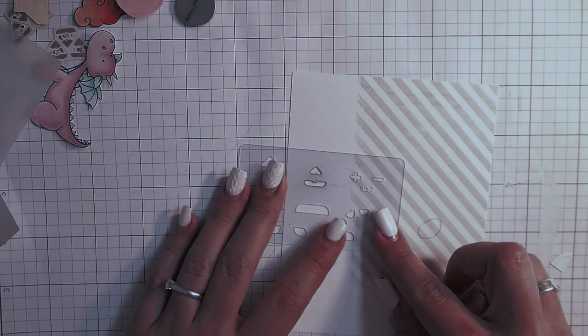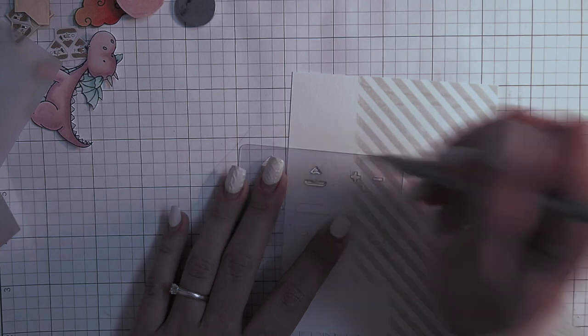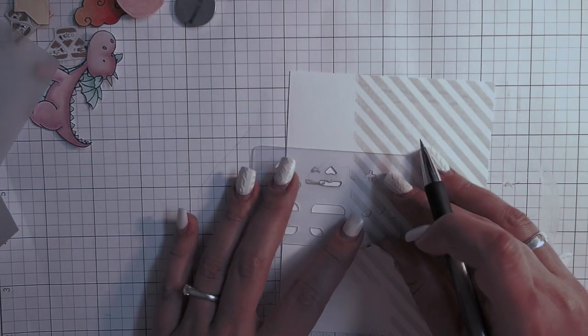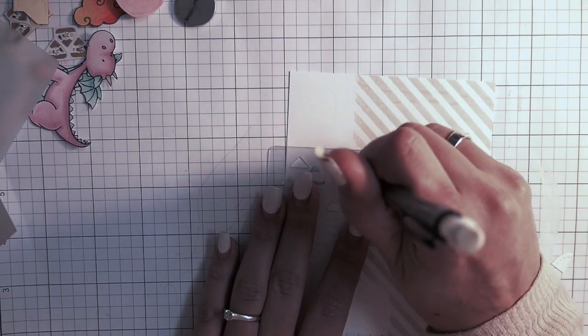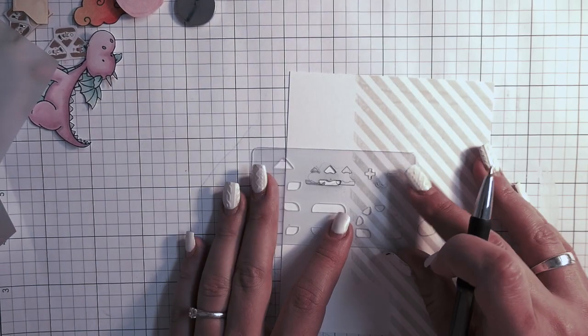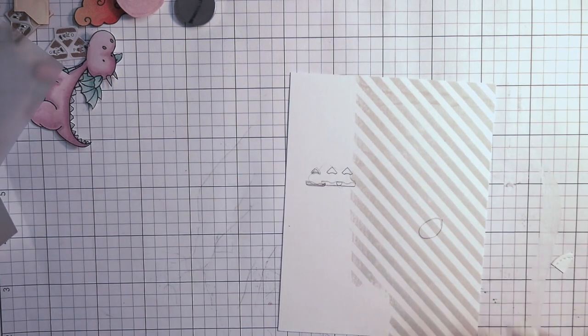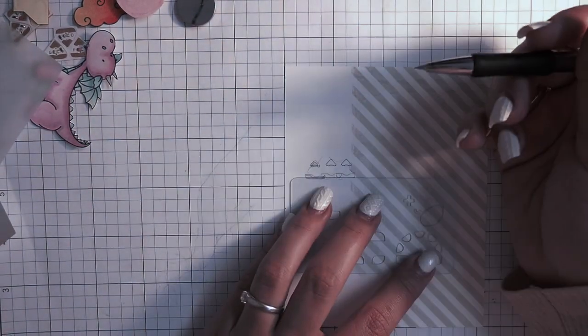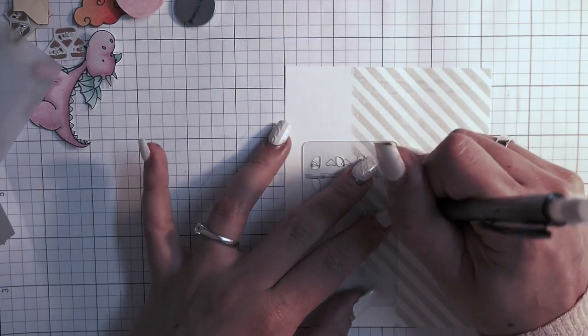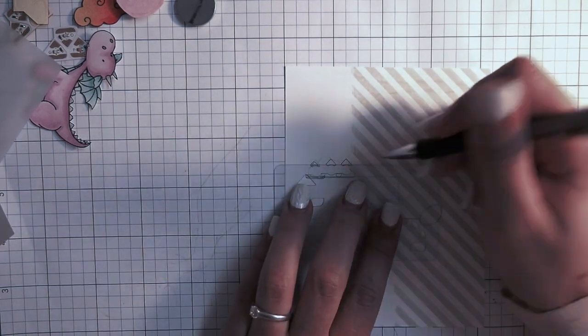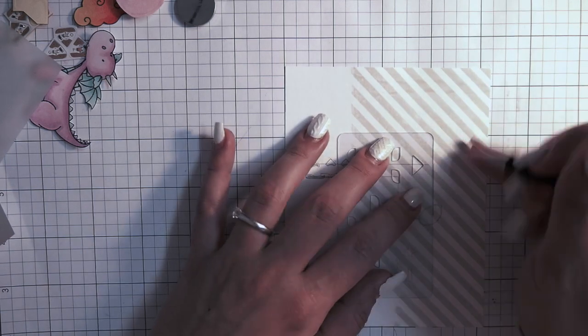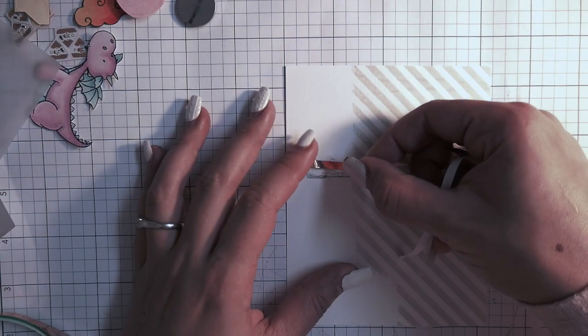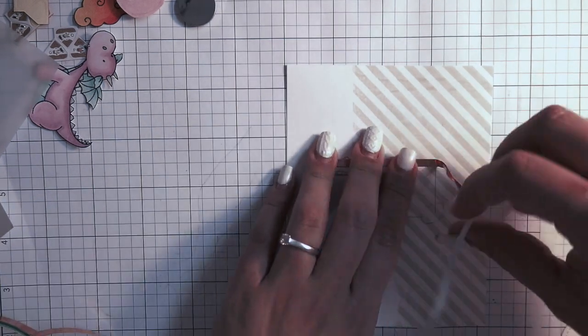Now I'm using my Chibitronics stencil to paint my LEDs in. For this card I think I could have skipped this part as the circuit is really simple, it's just a simple circuit. But I like to do it for you in the video so you can see everything better.